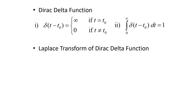So if we want to take the Laplace transform of the Dirac delta function, we're going to use the following theorem. As long as t naught is greater than 0, then the Laplace transform of delta of t minus t naught is going to equal e to the negative s times t naught, or equivalently e to the negative t naught s.